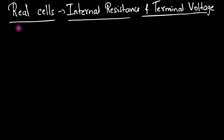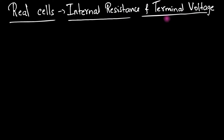Welcome. Today we're going to talk about real cells. We're going to try and differentiate between an ideal cell and a real cell. We will see the main difference is something called internal resistance, and because of which we're going to have a new term called terminal voltage. To make sense of all of this, let's begin with an example.